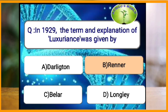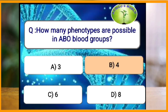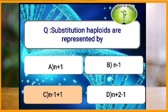The term and explanation of luxuriance was given by Renner. How many phenotypes are possible in ABO blood groups? In ABO blood groups, four types of phenotypes are possible: A, B, AB, and O.